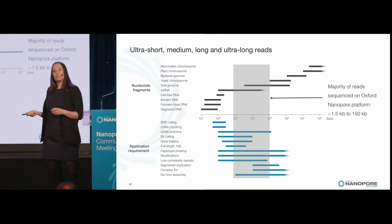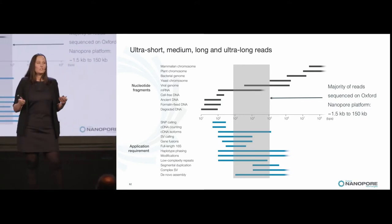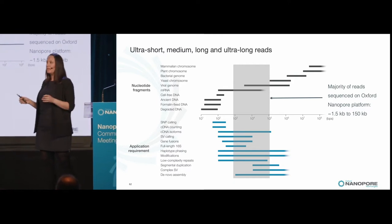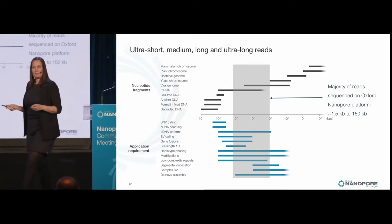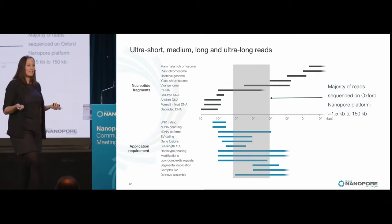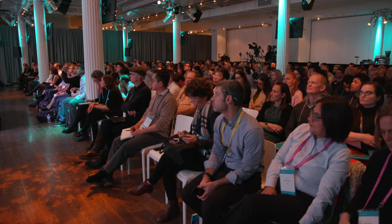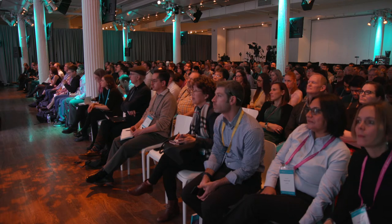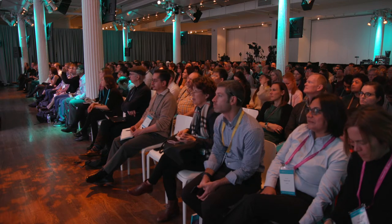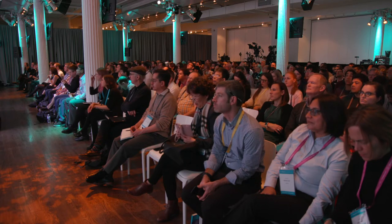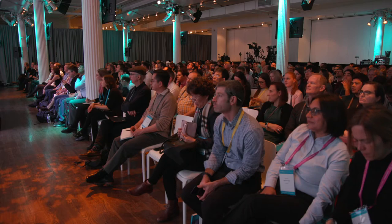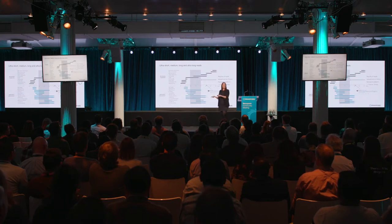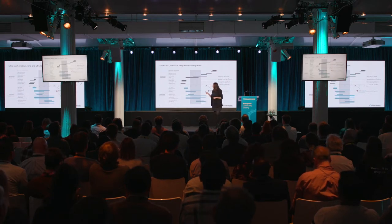The majority of people sequencing on nanopores at the moment are in the range of around 1,500 to 2,000 bases up to about 150K. People have done libraries with average sizes of 150KB, which is very impressive but makes library prep more difficult. There's also the famous ultra-long read by Matt Luce's team — still the record at 2.3 megabases. What I wanted to talk about today is the other side of the spectrum: the really short reads. Not many people sequence short reads on nanopores because we're uniquely known for long ones, so this is a good opportunity to talk about the short ones.